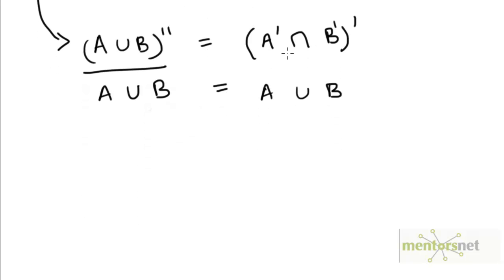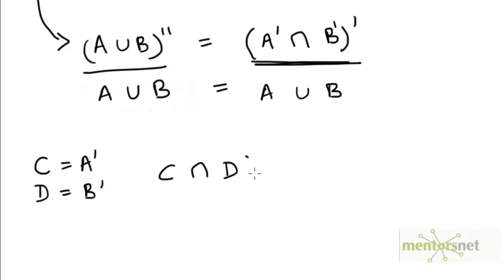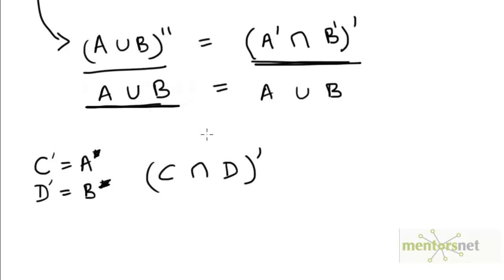Let me say this more formally. Let's say that C is the set A complement and D is the set B complement. The right hand side is the set C intersection D complement. The left hand side is A union B, or A union B double complement — they are the same thing. If C is A complement then A would be C complement, because the double complement cancels out. Likewise, B can be expressed as D complement. So the left hand side A union B can be expressed as C complement union D complement. Since both sides are equal, C intersection D complement is the same as C complement union D complement.